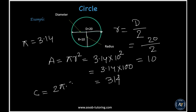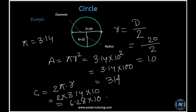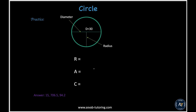The circumference equals 2 times pi times radius, so 2 times 3.14 times 10. That gives 6.28 times 10, which equals 62.8. Try the next practice problem — the values are different — and find the radius, area, and circumference.